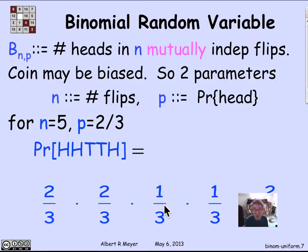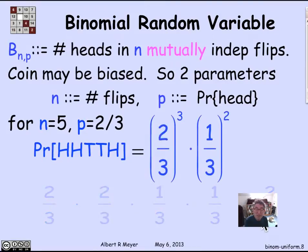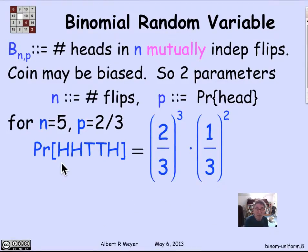So I can replace each of those by 2/3 is the probability of a head, 2/3, 1 minus 2/3 is the probability of a tail, 1/3, 2/3. And I discover that the probability of h, h, t, t, h is 2/3 cubed and 1/3 squared.